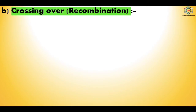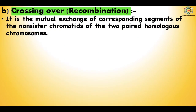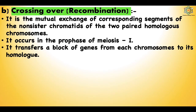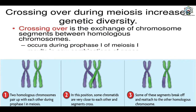The second cause is crossing over, meaning recombination — the mutual exchange of corresponding segments of non-sister chromatids of two paired homologous chromosomes. It occurs in prophase of meiosis I, transferring a block of genes from each chromosome to its homolog. Two homologous chromosomes pair during prophase I; some chromatids cross, segments break off and reattach to the other homologous chromosome, resulting in new recombinants.